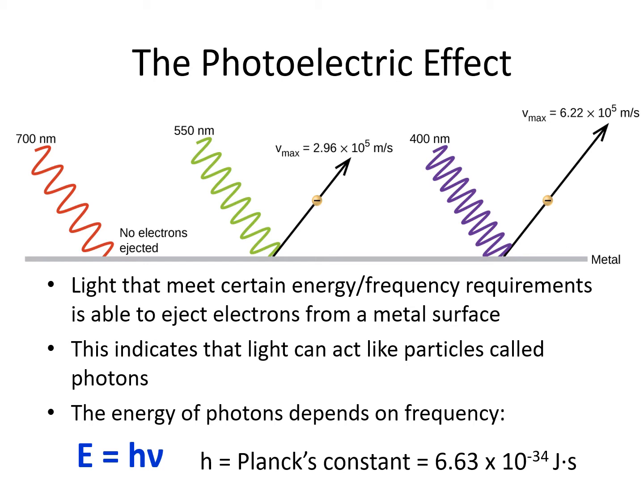In this experiment, Albert Einstein showed light of different frequencies on a metal surface. At long wavelengths and low frequencies, no electrons were ejected from the surface.